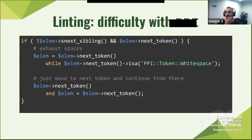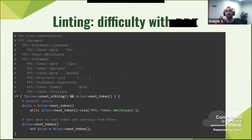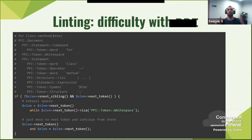This is an example of difficulties with PPI. I'm getting the next sibling — checking if there is no next significant sibling, which means it has to jump over the spacing. But there is a next token, so I need to exhaust the spaces — a line I copy-paste everywhere — and then move to the next token. This piece of code I wrote is checking that you wrote 'for', then 'class', then 'method', then 'foo'. It needs all this to understand what it's even meant to do.